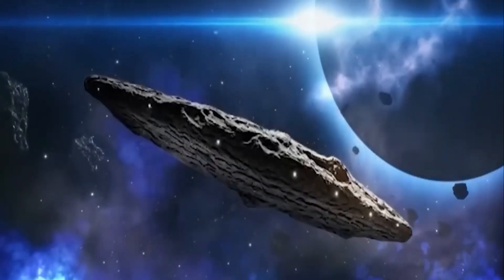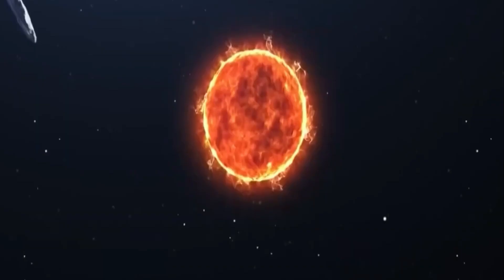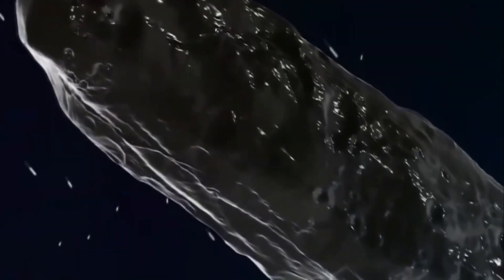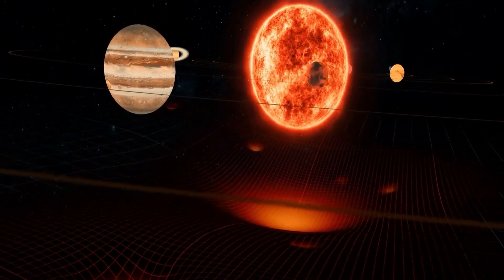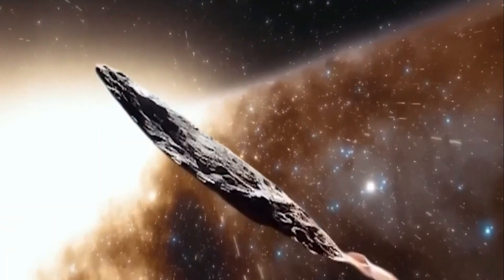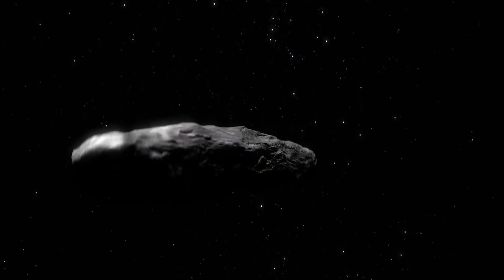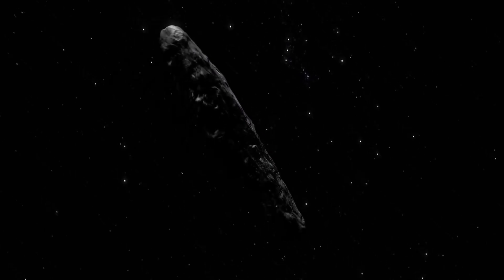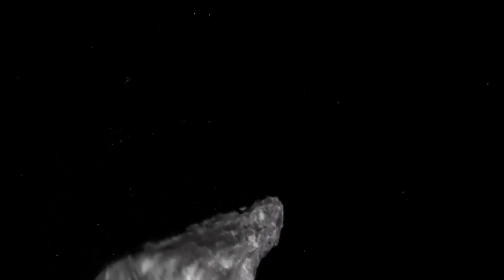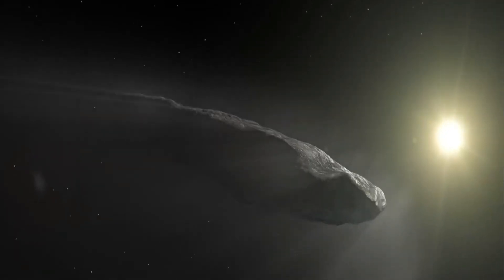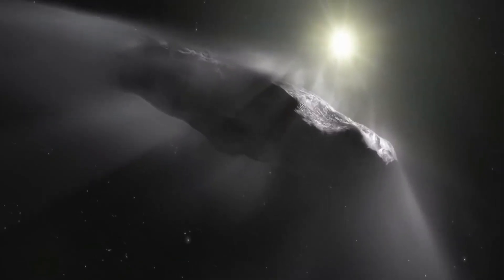Interestingly, there's a possibility that we might not need to travel to Oumuamua as it seems to be on a trajectory toward Earth. Scientists have revealed that Oumuamua is currently in proximity to Neptune, raising concerns about its potential return to Earth due to its peculiar orbit. If it does return, various scenarios could unfold. It's crucial not to assume that Oumuamua can't reach Earth after covering a significant distance. Uncertainties persist regarding the nature of this object and its full capabilities.